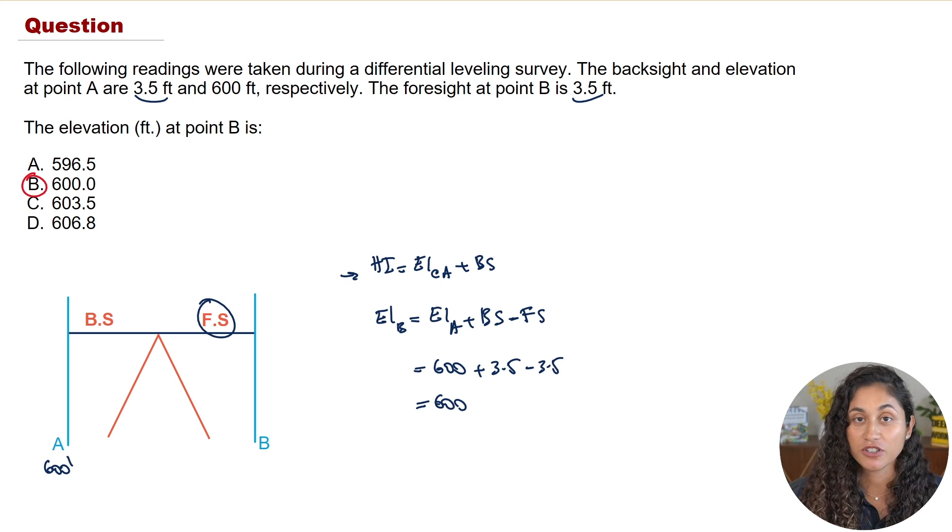Now we could have guessed that just by looking at the problem initially without having to calculate anything, right? So if the backside and foresight are equal that means that both points are going to be at the same elevation. But I wanted to go over these concepts with you guys and also I wanted to share with you guys the equations just in case on the FE exam you get a foresight that is not equal to the backside. So then in that case what do you do? Well then you just apply this equation.